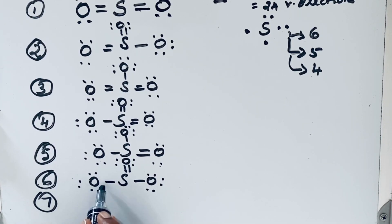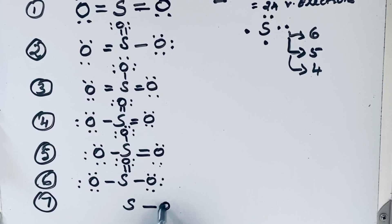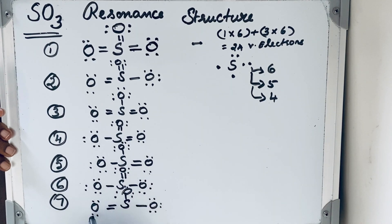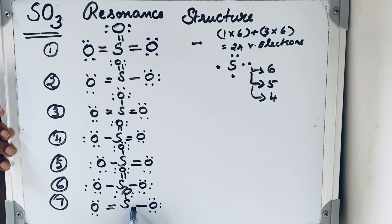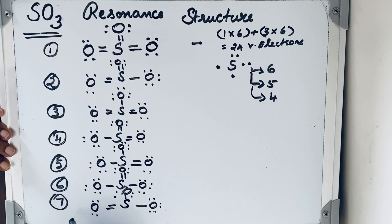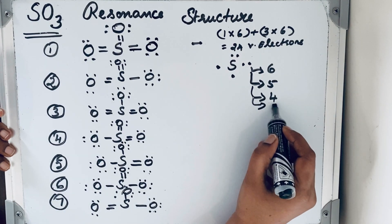For the seventh resonating structure, we place the double bond on the remaining terminal oxygen atom, with all other S–O bonds as single bonds. Verifying: 2, 4, 6, 8, 10, 12, 14, 16, 18, 20, 22, 24 — 24 valence electrons are present. This is the seventh resonating structure for SO3.